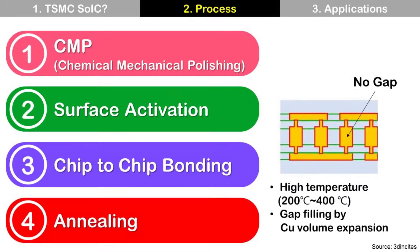Step 4: Annealing. This process makes copper-to-copper metal bonding at high temperature — for example, 200°C to 400°C — and it becomes an electrical connection. The gap is filled by copper volume expansion from the heat of annealing. Filling the gap completely without any void is difficult and challenging to achieve.